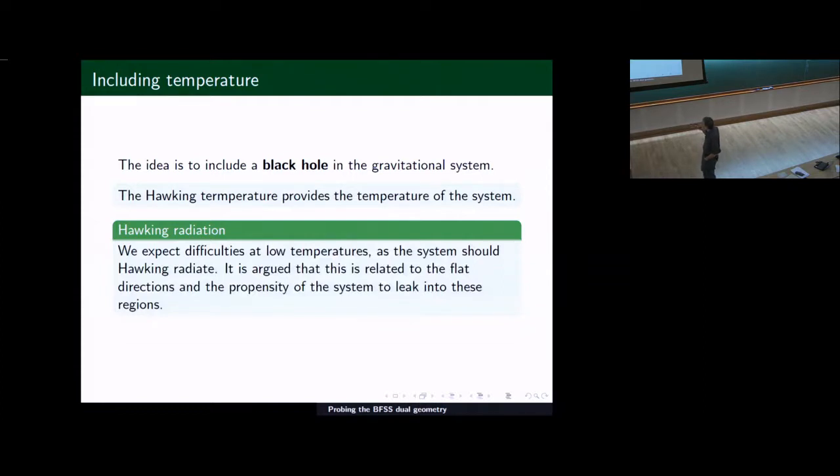So to describe the thermal physics of it, the idea is to introduce a black hole in the gravitational system. And the Hawking temperature of that black hole should describe the temperature of the system. So we're going to identify the beta in the trace with the Hawking temperature of the black hole system. This is part of the AdS correspondence, which we should check. And because there's Hawking radiation in the system, once we turn on the quantum corrections, one expects that the model should have instabilities. The classical limit is valid at large N. So one expects at small N that the Hawking radiation should be a problem.